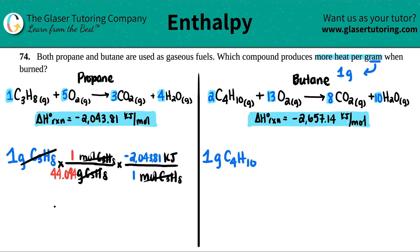And now let's see how much heat is going to be produced by just one gram. So 2043.81 divided by 44.094. And I get a negative 46.35 kilojoules. So this means that if I have one gram of propane, I'm going to release, because it's a negative, 46.35 kilojoules. But 46.35 kilojoules will be produced.